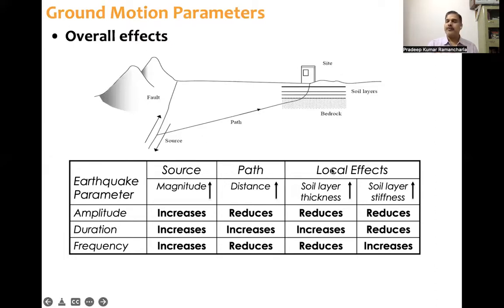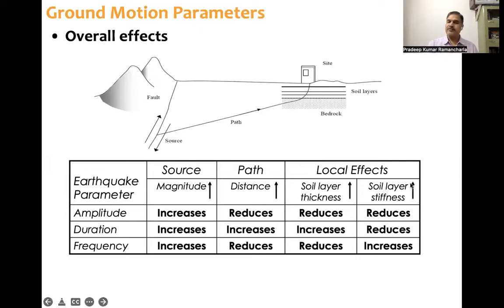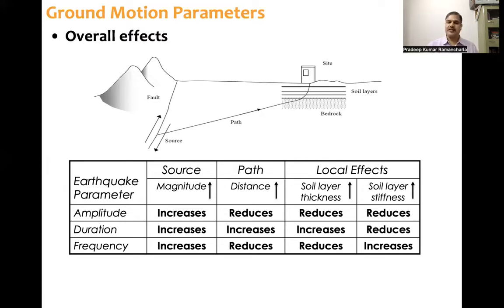Coming to local effects: the thickness of the site — all the effects are similar to the path effects. When it comes to the stiffness of the site or the flexibility of the soil layers: if stiffness increases, then amplitude reduces, duration also reduces, and for frequency content, high frequency waves are retained — they are not filtered out as they would be in a softer site.